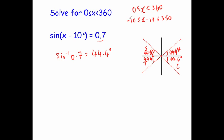Now we need to get our angles that are between negative 10 and 350 degrees. Because it was 0.7 which is positive, it's going to be in the quadrants where sine is positive. Sine is positive in quadrant A and quadrant S.